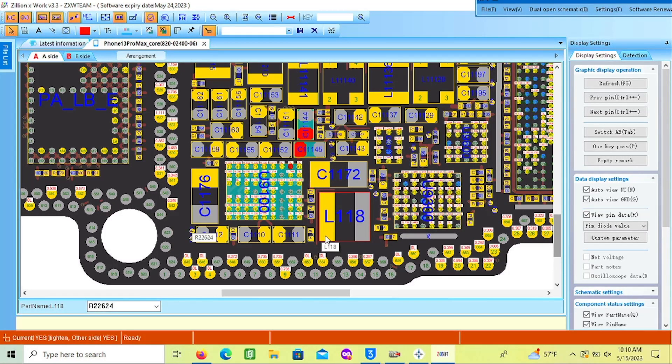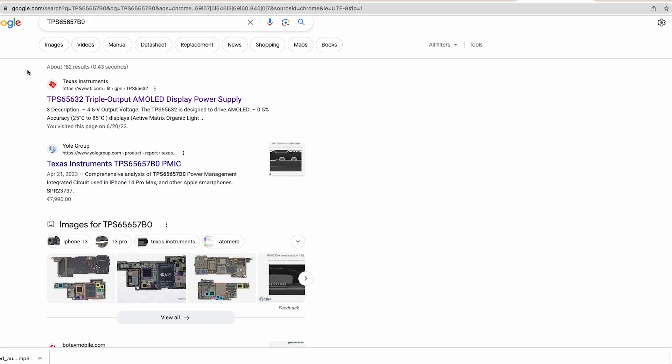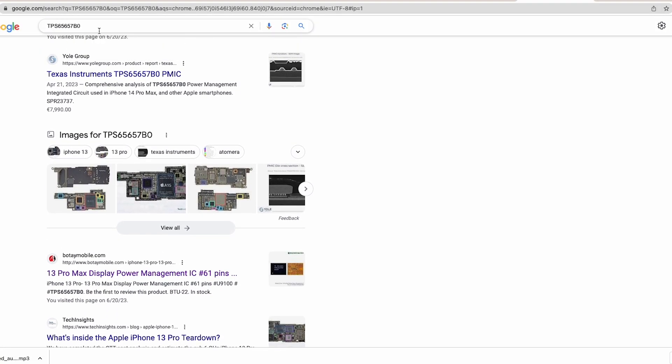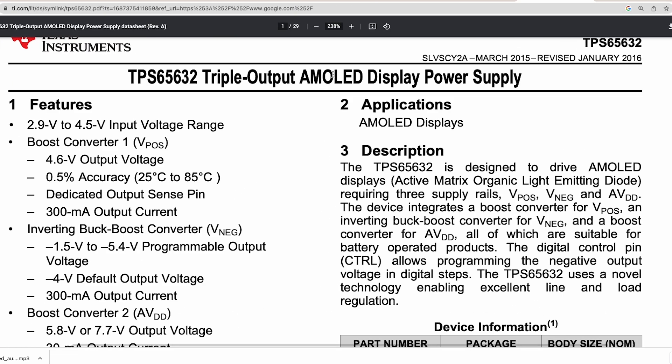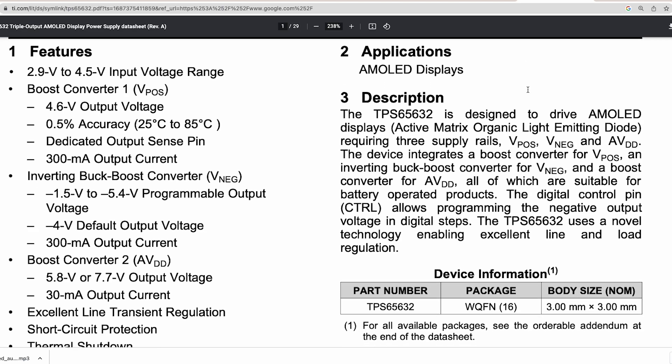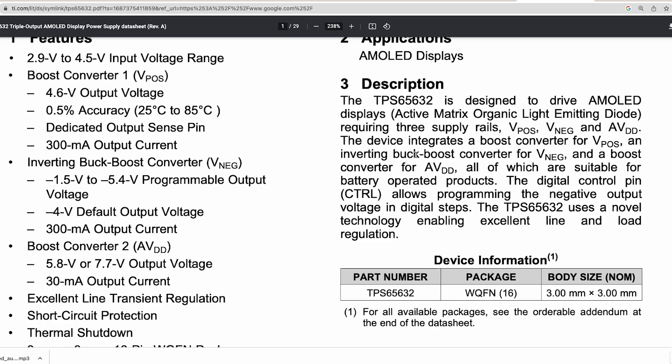Since there are no schematics available for the iPhone 13 Pro Max, we have to do some research. When we search for the U9100 circuit part number on Google, we find a datasheet for the IC, and we find out that it is the display power management IC. One of the features of this particular IC is an integrated boost converter.